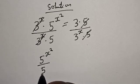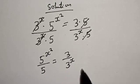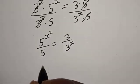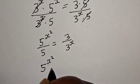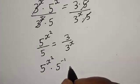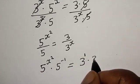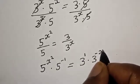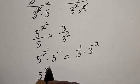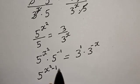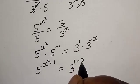We have 5 raised to power s squared divided by 5 is equal to 3 divided by 3 raised to power s. Then this is 5 raised to power s squared multiplied by 5 raised to power minus 1 is equal to 3 raised to power 1 multiplied by 3 raised to power minus s. Then this is 5 raised to power s squared minus 1 is equal to 3 raised to power 1 minus s.